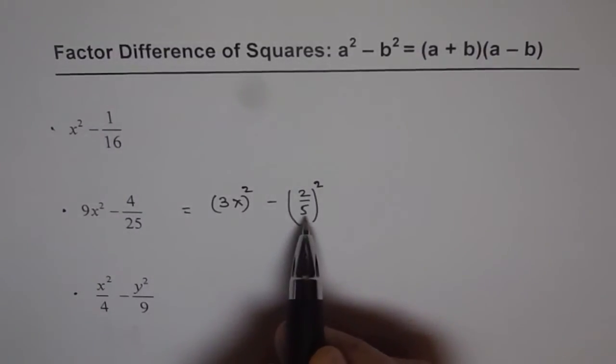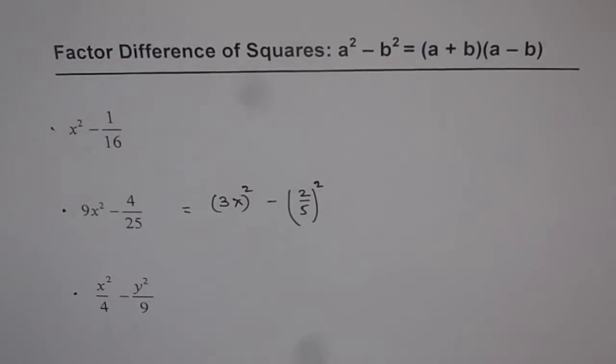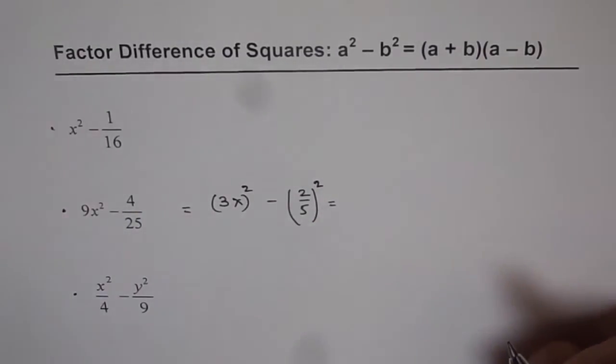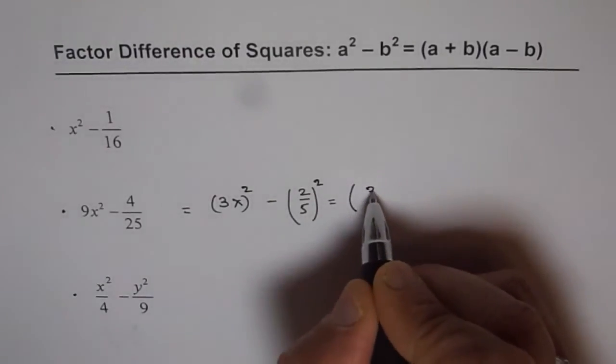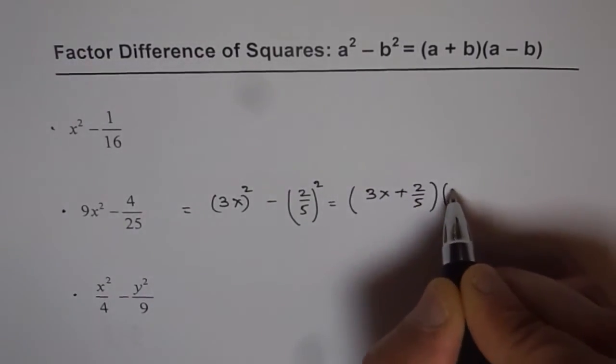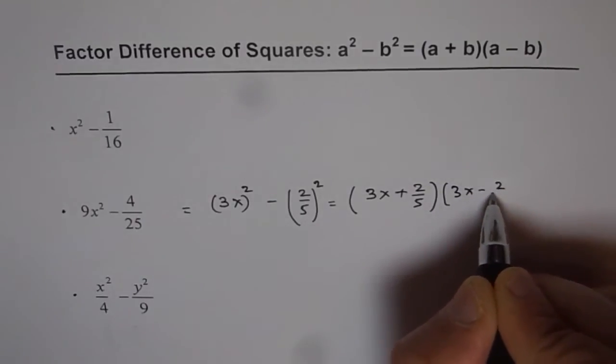Once we have difference of squares we can adopt this method. That is product of their sum and difference is the factored form. So we can write this as 3x plus 2 over 5 times 3x minus 2 over 5.